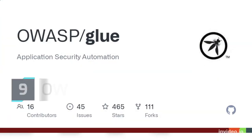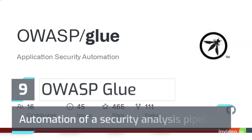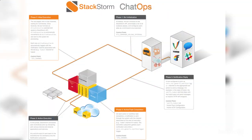Number 9: OWASP Glue – automation of a security analysis pipeline.